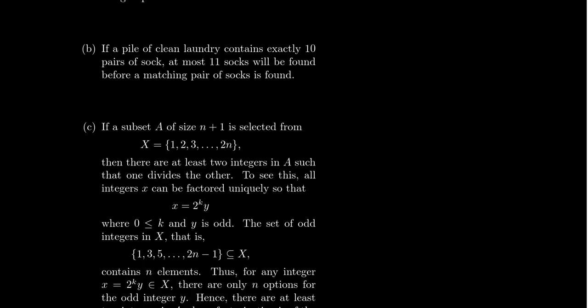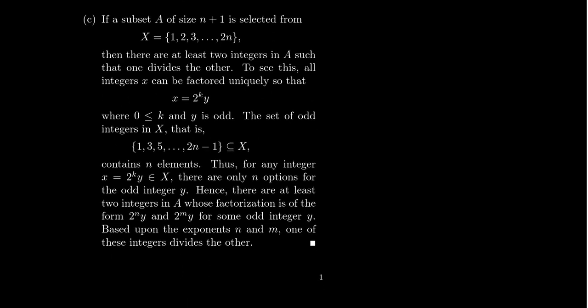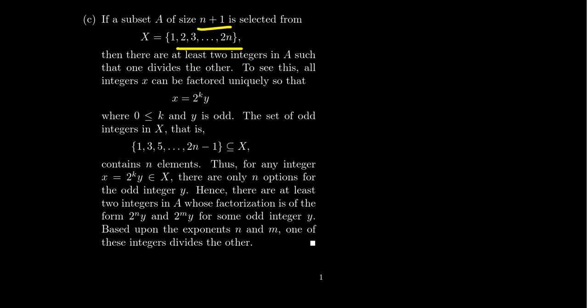Let's look at one that's a little more mathematical and sophisticated, where we can still leverage the pigeonhole principle. Suppose a subset A of size N plus 1 is selected from the set X, which contains the positive integers 1, 2, 3, 4, up to 2N. Then I claim that there are at least two integers in A such that one divides the other. No matter how that subset is chosen, there will be one number that divides the other. To see that, we're going to turn this into a pigeonhole problem.